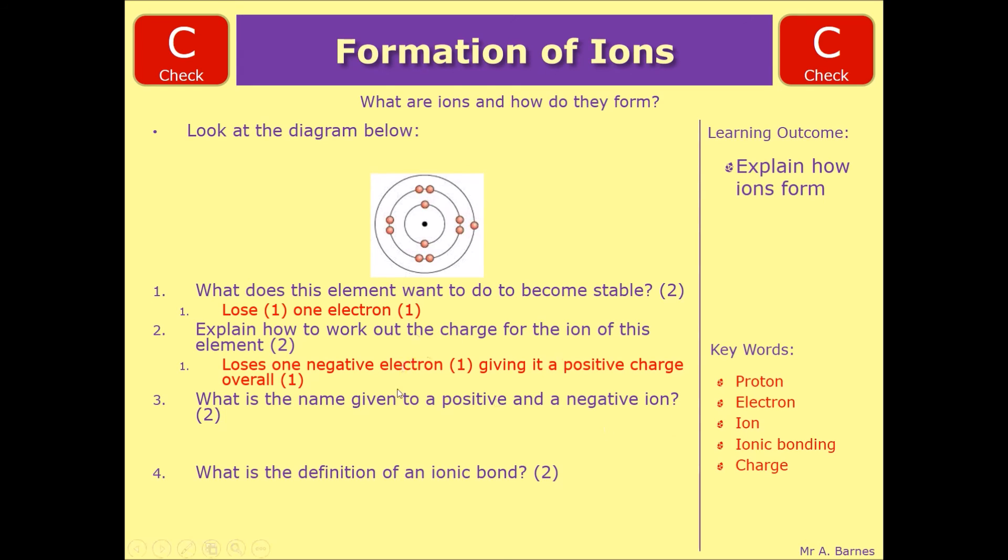Part three. What is the name given to the positive and negative ions? Cations are positive. One mark. Anions, a negative ion. Negative.